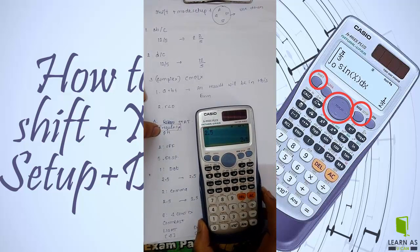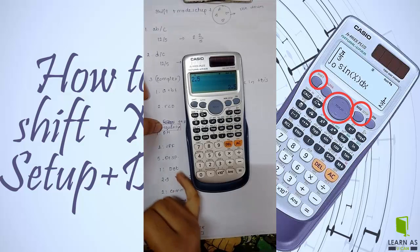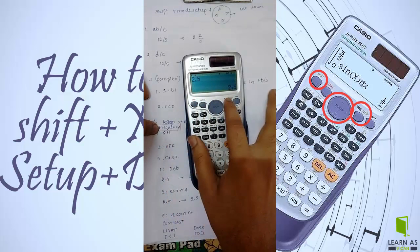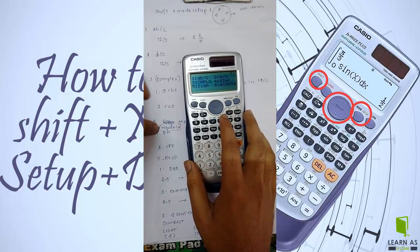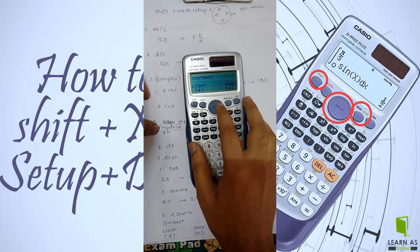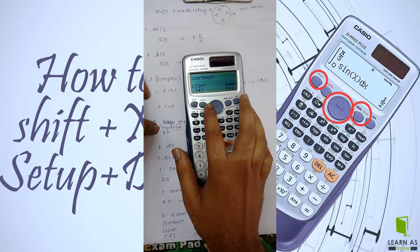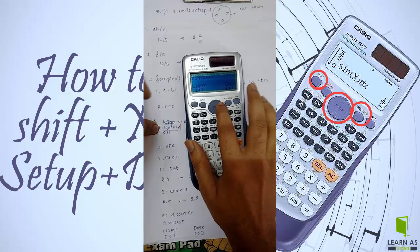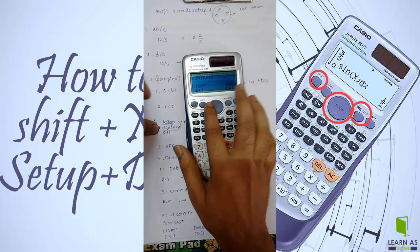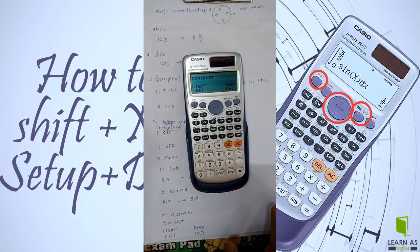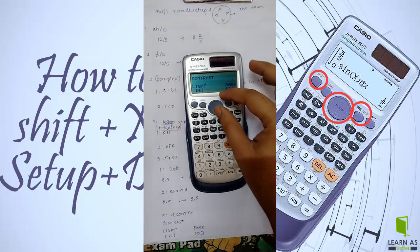The next mode setup option is contrast. So you can change the light brightness according to what you want. You can see if I want to adjust it. And this way you can use shift plus mode setup plus this menu button.